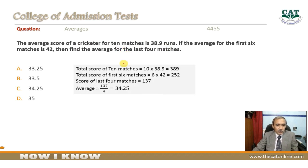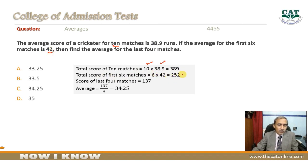Total score of 10 matches: n into average = 10 × 38.9 = 389. Total score of the first six matches: since their average is 42, six into 42 = 252. So the score for the six matches is 252.